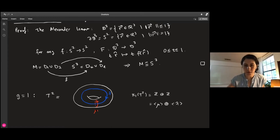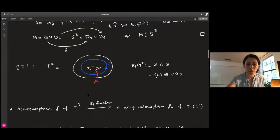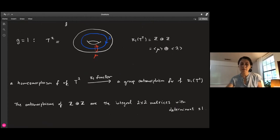We know that the fundamental group functor converts any homeomorphism of F to a group homomorphism of π₁. In the case of the torus, we know π₁ is Z ⊕ Z.